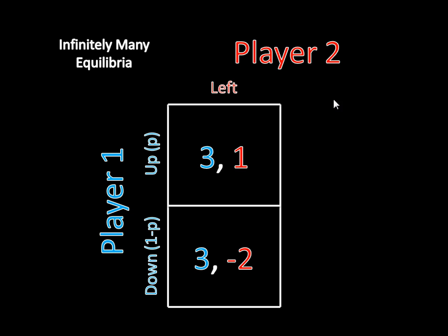Any number P makes this an equilibrium. Player 2 doesn't want to shift from Left because Right is strictly dominated. And Player 1 is indifferent since he always gets 3 regardless of what's going on, so he can't profitably deviate. He's stuck getting 3 no matter what, which makes him free to mix. Because P could be 1/2, 1/3, 2/5, 67%, or anything, and there are infinitely many numbers between 0 and 1, there are infinitely many equilibria in this game.